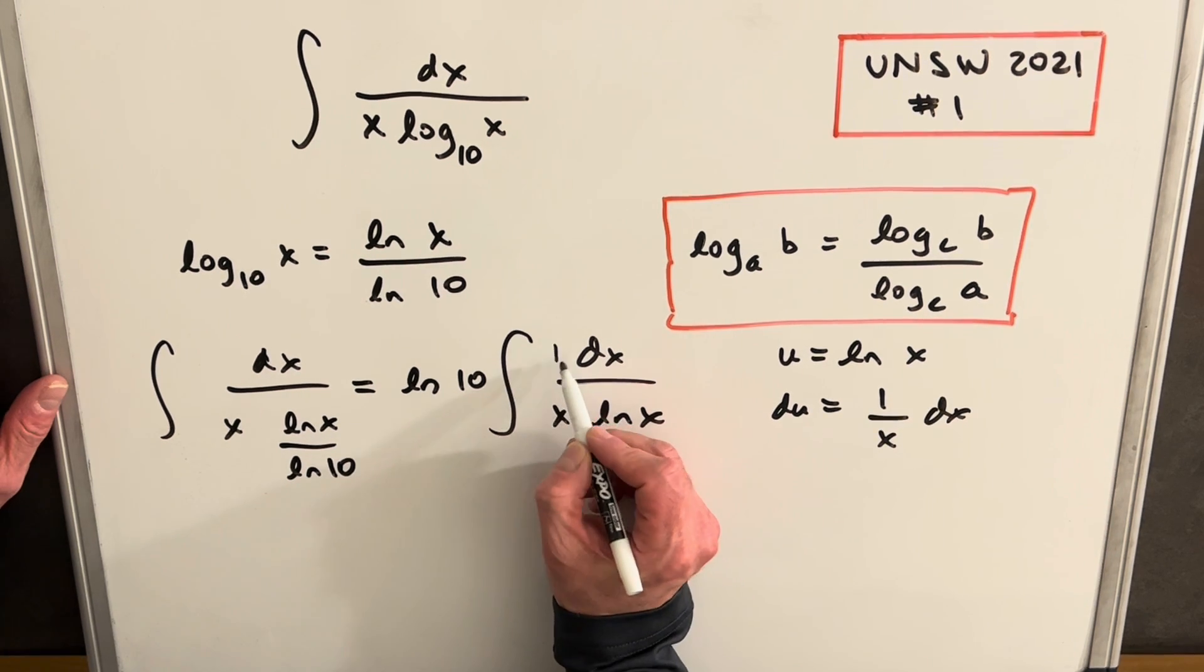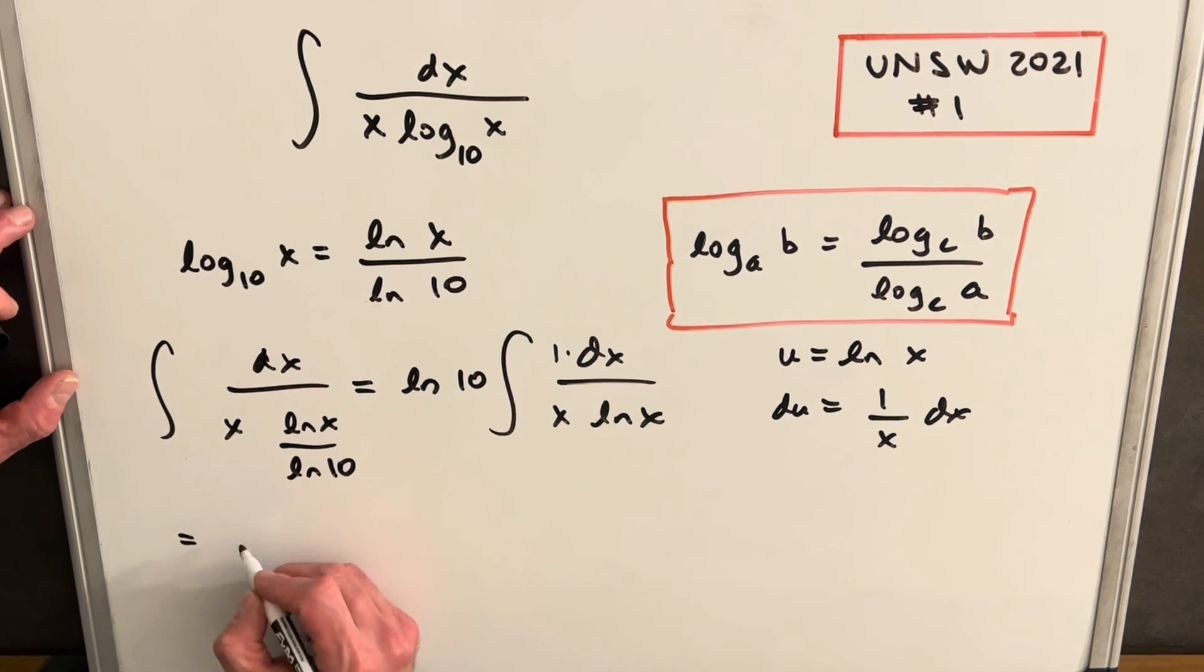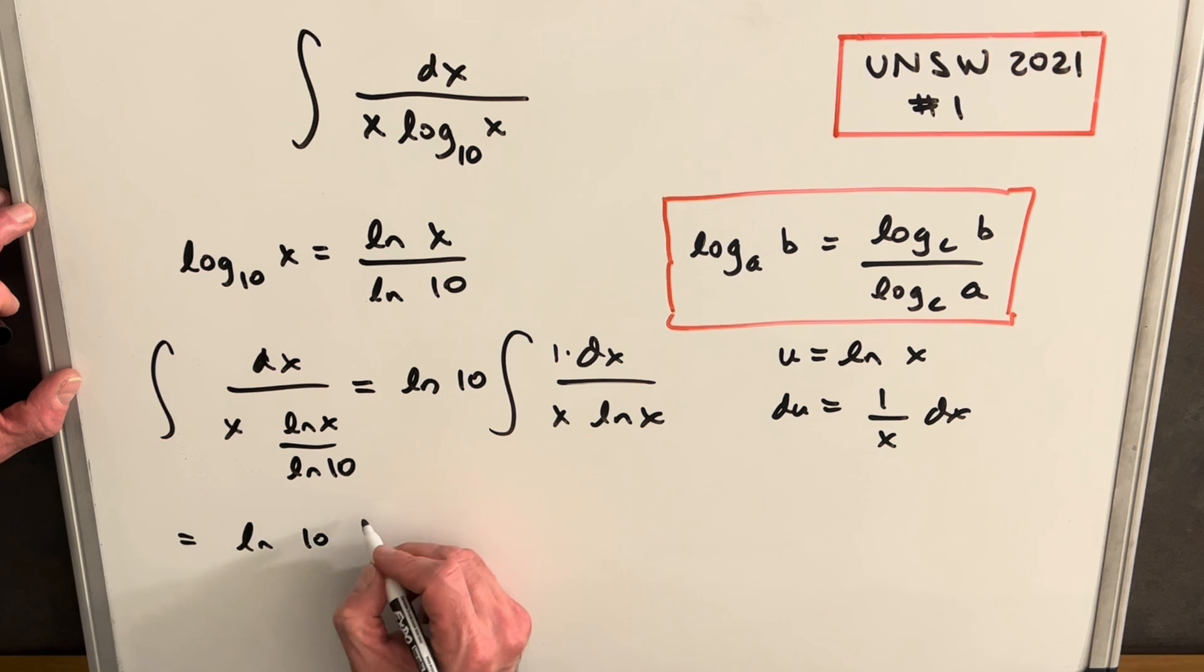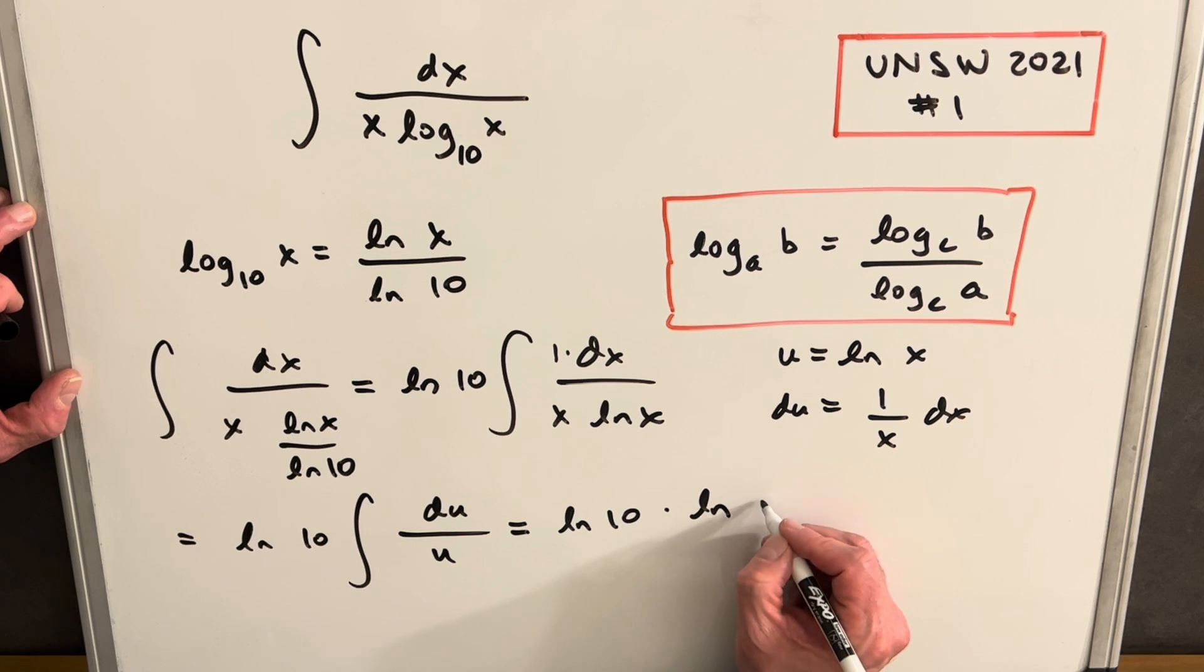We notice we have a 1 over x dx right there, so we have our du. Making this substitution, we'll have ln 10 in front. We're going to have du in the numerator and u in the denominator. Taking the integral still with our ln 10 here, this is just going to be natural log of u.